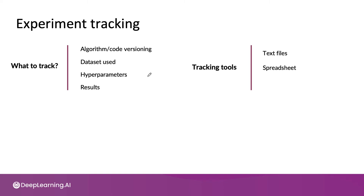But beyond a certain point, some teams will also consider migrating to a more formal experiment tracking system. The space of experiment tracking systems is still evolving rapidly, and so there's a growing set of tools out there. Some examples include Weights and Biases, Comet, MLflow, SageMaker Studio, and Lambda AI, which also has its own experiment tracking tool focusing on computer vision and manufacturing applications.